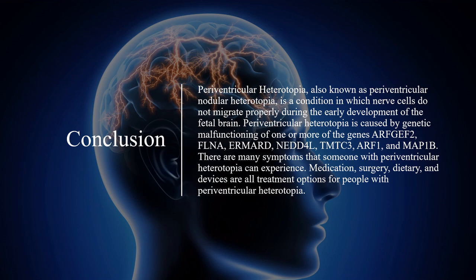In conclusion, periventricular heterotopia, also known as periventricular nodular heterotopia, is a condition in which nerve cells do not migrate properly during the early development of the fetal brain. It is caused by genetic malfunctioning of one or more of the following genes: ARFGEF2, FLNA, ERMARD, NEDD4L, TMTC3, ARF1, and MAP1B. There are many symptoms that someone with periventricular heterotopia can experience. Medication, surgery, dietary, and devices are all treatment options for people with periventricular heterotopia.